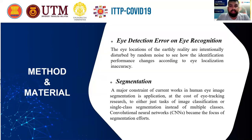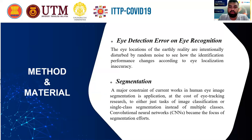Now the methods and materials. Firstly, the eye detection error in eye recognition. The eye location of the ground truth reality are intentionally disturbed by random noise to see how the identification performance changes according to eye localization accuracy. The second point is the segmentation used in this project. Segmentation is a major constraint of current work in human eye image, and segmentation is the application at the cost of eye tracking research, reducing the task to image classification or single class segmentation instead of multiple classes.